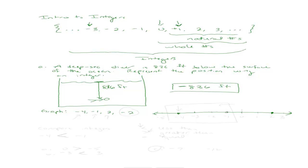The number line goes on to infinity in both directions, on the left and on the right. We're only going to represent a part of it: negative 5, negative 4, negative 3, negative 2, negative 1, 0, 1, 2, 3, and so on. To graph negative 4, simply place a dot on negative 4. Negative 4 is less than 0, so it is to the left of 0. Negative 1 would be here, positive 2 would be here. I'll leave negative 2 for you to graph.